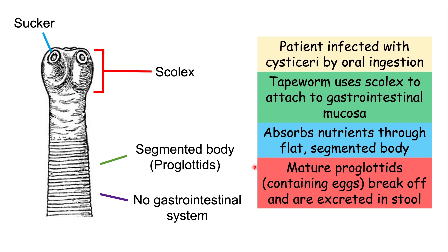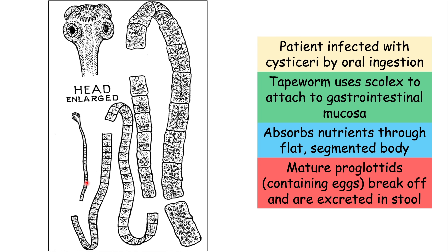What then happens is that mature proglottids — the little segmented areas of the body which contain eggs — break off and are excreted in stool. These little segments literally break off of the main chain of the tapeworm and are excreted in the patient's stool, then entering the environment to infect other hosts.